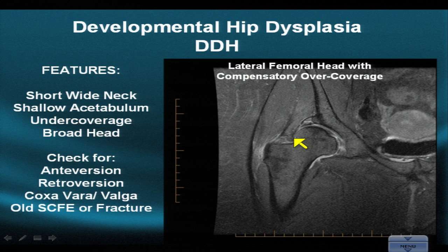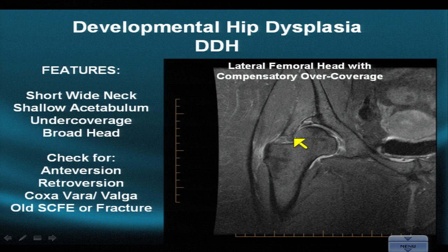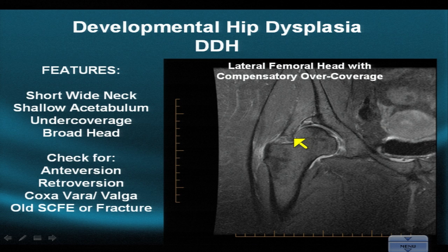We also check for more classic findings in FAI, such as anteversion, where the back wall of the acetabulum is overdeveloped and pushes the femur forward and rotates it forward, or retroversion, where the front wall is overdeveloped and pushes the femoral head backwards. Most are familiar with the phenomena of coxa vara and coxa valga from conventional x-ray. Additionally, old scars from a Salter-Harris 1 injury, slipped capital femoral epiphysis, or generalized old fractures may leave a linear low-signal scar permanently.